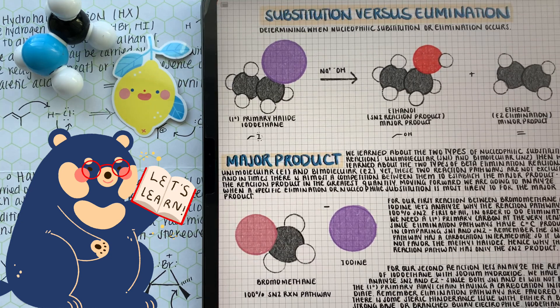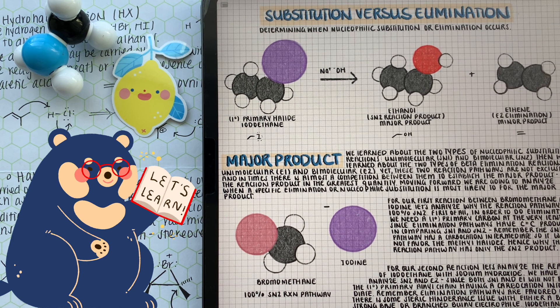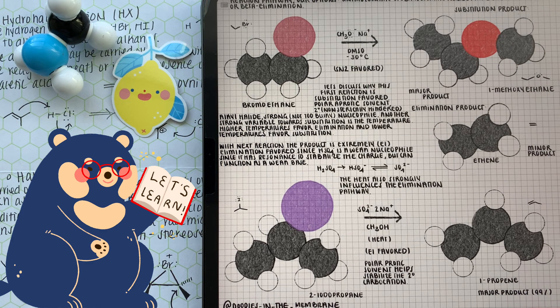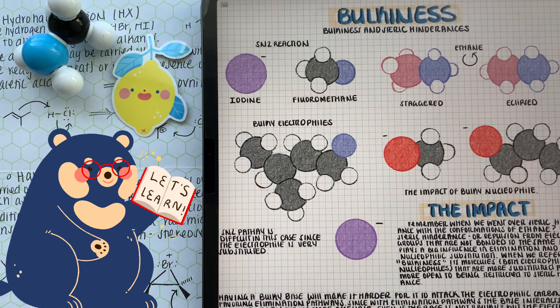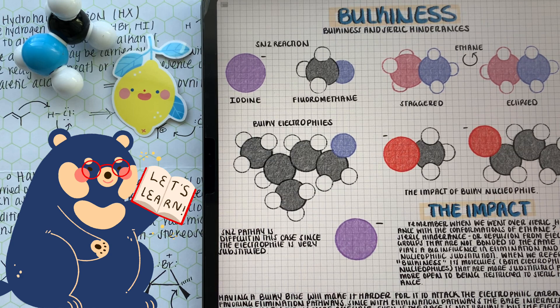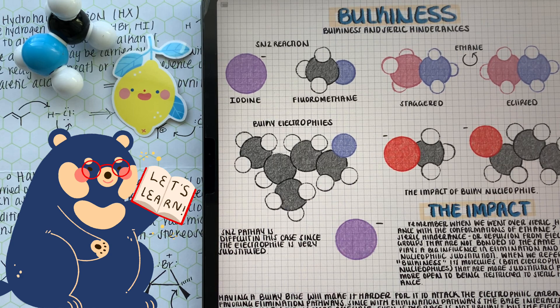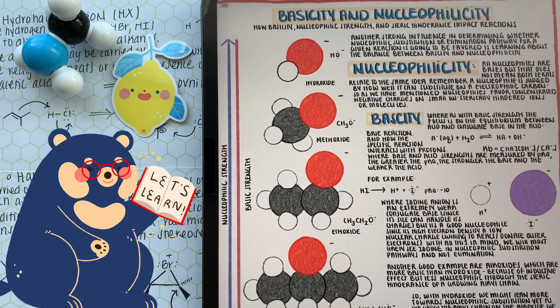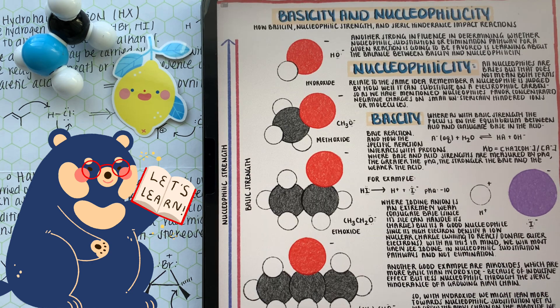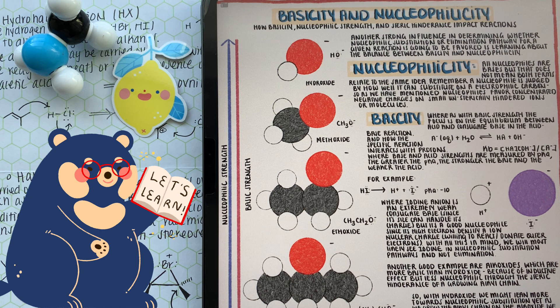Moving forward with this video, we have to establish that elimination and nucleophilic substitution products are not exclusive. These two pathways are constantly competing, and we alter the different conditions of the reaction to make sure we favor a certain pathway over the other. In order to dive deep into the different conditions that are favored by substitution and elimination, we need to talk about each of the conditions separately, and then we can refer to them all together to determine the major product.